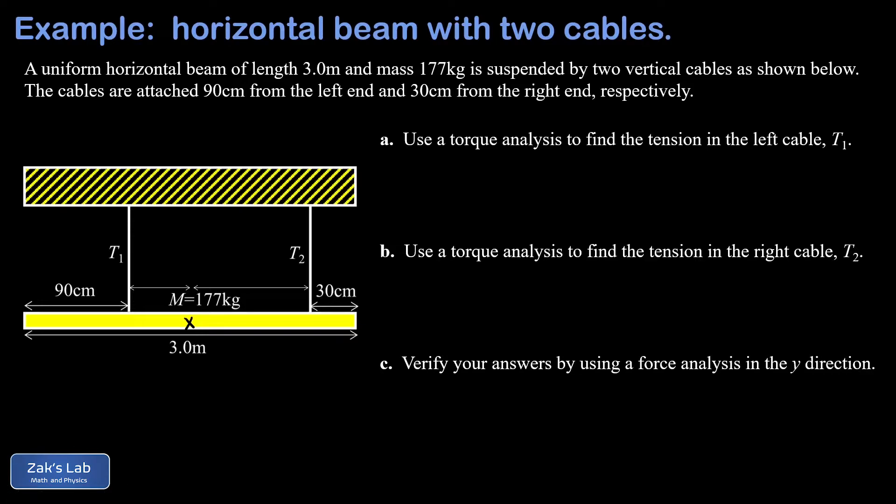If I look at the distance between the string T1 and the center of mass, it's attached 90 centimeters from the left end or 0.9 meters. The center of mass is at the 1.5 meter mark, which means the distance between the string and the center of mass is 0.6 meters. I take a similar approach with T2, that's connected 30 centimeters or 0.3 meters from the right end, which means the distance between the center of mass and the attachment of that string is 1.2 meters.